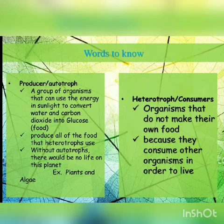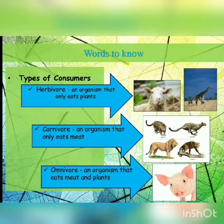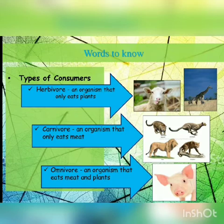So in this slide there are two words: producers and consumers. Now let's look at the types of consumers. The first type is herbivores — organisms that only eat plants. Examples include sheep, giraffe, and zebra. These organisms only eat plants, so they are called herbivore animals.